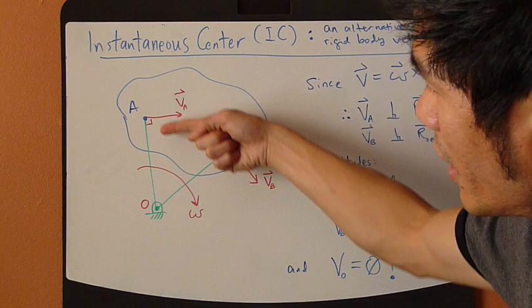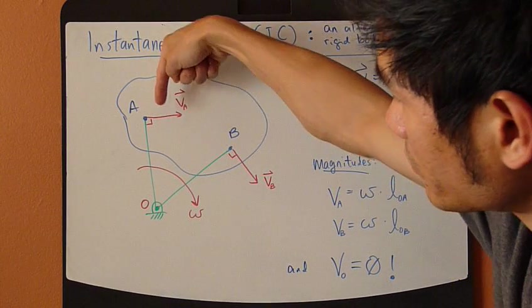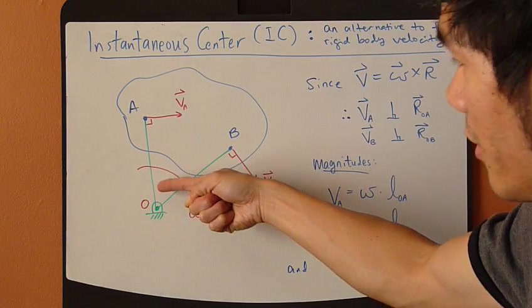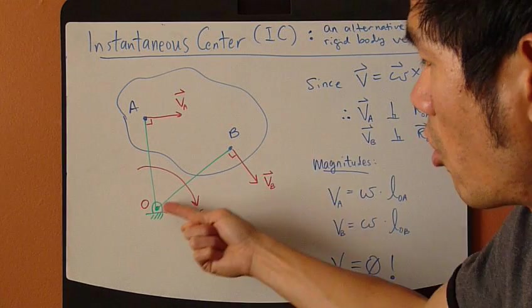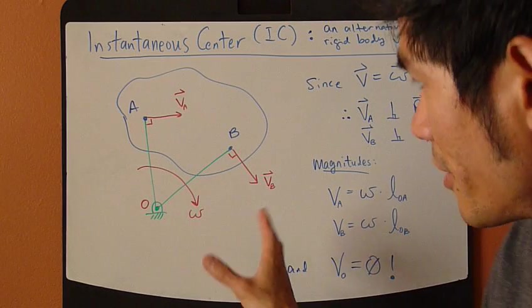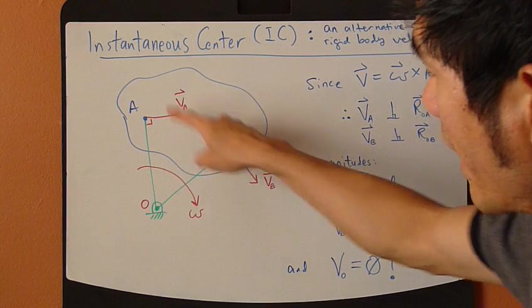So at this very instant, this rigid body is rotating about this point O, and the velocity of A will be perpendicular to this OA string, and velocity of B is perpendicular to OB string. And this is fixed rotation right now. At this instance, this rigid body would have an angular velocity of omega.